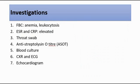For investigations of acute rheumatic fever, we can do a full blood count, where we expect to see anemia and leukocytosis. The erythrocyte sedimentation rate and C-reactive protein will be elevated. The third investigation is a throat swab for group A strep. We can also do an antistreptolysin O titer (ASOT) — if it is raised, which is more than 200 U/mL, it may suggest group A strep infection.